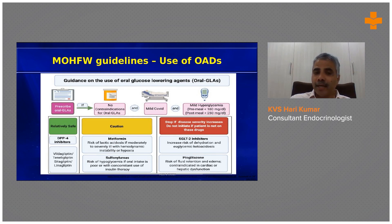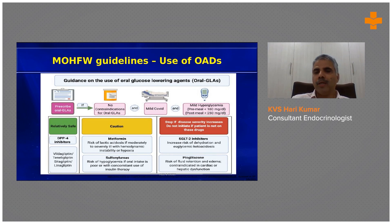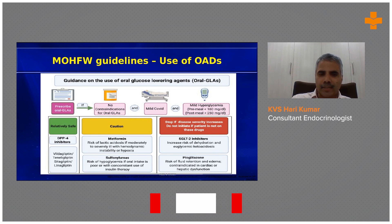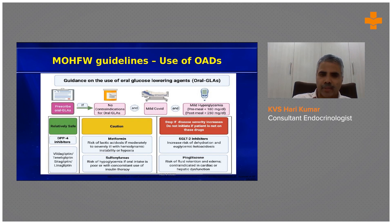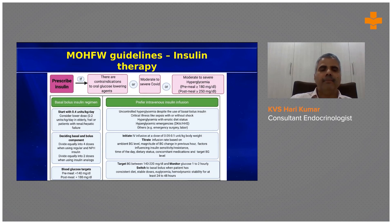Oral drugs can be used when someone has very insignificant hyperglycemia where adding a tablet will do the job without requiring insulin. DPP4 inhibitors are relatively safe. Metformin and sulfonylureas can be used with caution. SGLT2 inhibitors and thiazolidinediones are preferable to avoid. For the rest of the patients, insulin is required.